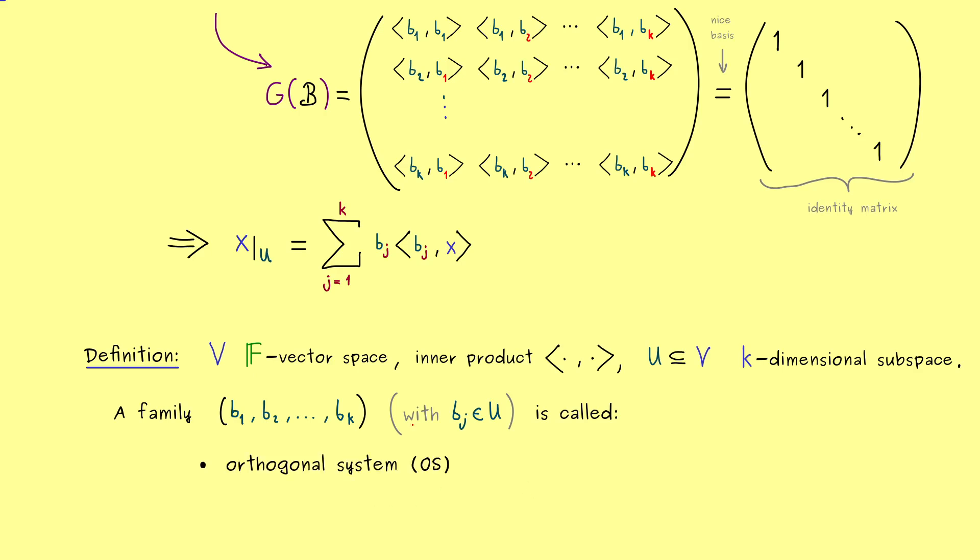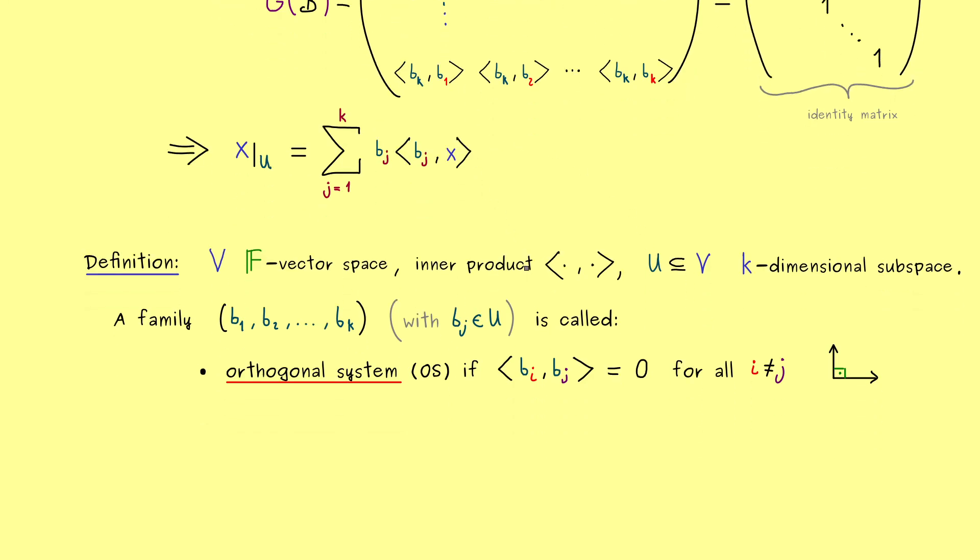The first notion is just orthogonal system, in short OS. And as the name suggests, there we just need that the inner product vanishes. So we don't claim for the Kronecker delta here, we just claim for 0 in the case that i and j are not equal. So no matter how we put two different vectors together, we always get out 0. So this simply means that the vectors are mutually orthogonal. So if we combine two different vectors, we always find the right angle there. Sometimes this is already helpful, so the length is not important for the vectors, but you already know we want more.